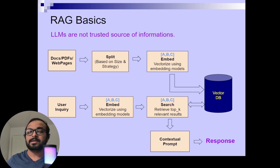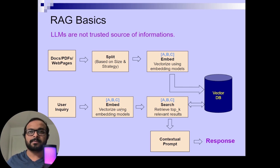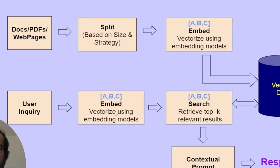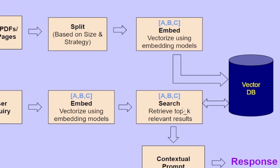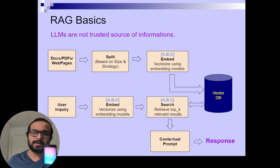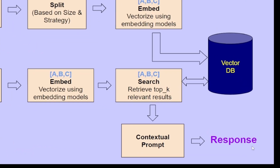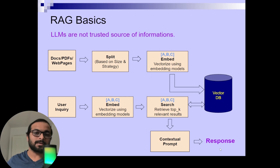Later on in your AI application, when a user inputs a query, that query will also be embedded. Using the embedding or numerical representation of the query, it will search for the nearest vectors from the vector database. Then it will send the information from the vector database — based on the top K number of results you are fetching — to the LLM as a contextual prompt. And then your LLM will finally create the response using the searched information from your vector database.